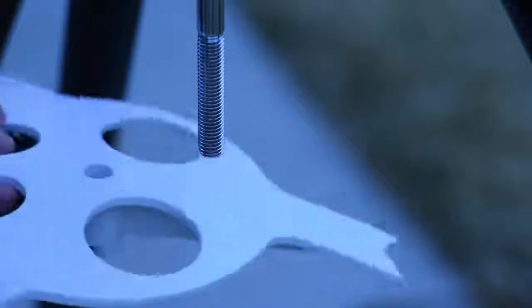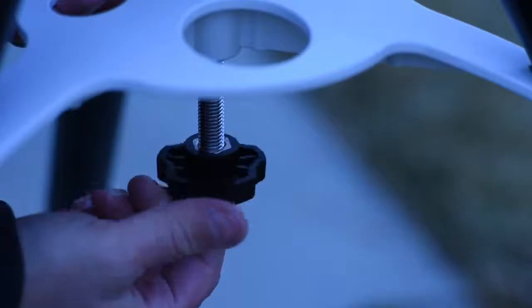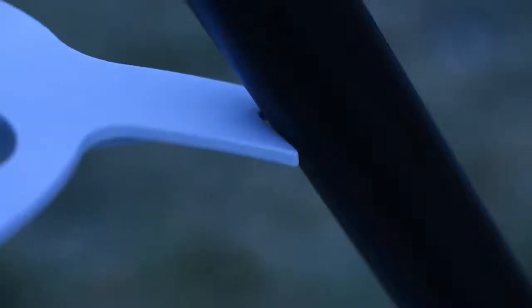Move the back altitude adjustment knob until the degree scale on the mount matches the latitude for your observing site. Remove the accessory tray nut from the center rod and slide the accessory tray up until it comes in contact with the tripod legs. Attach the nut and firmly tighten until the accessory tray is in full contact with the tripod legs.